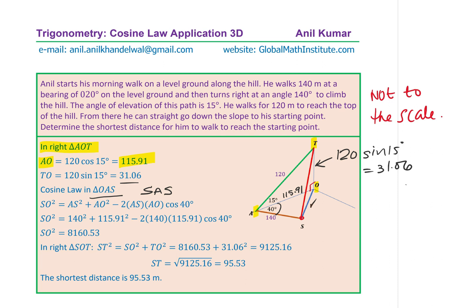Now that we know SO² and TO, we can find ST — the hypotenuse of right triangle TOS. Using the Pythagorean theorem: ST² = SO² + TO² = 8160.53 + 31.06² = 9125.16. Therefore ST = √9125.16 = 95.53 meters. You could also round this to 96 meters.